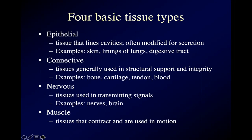The cells in an animal are organized — except in the sponges, the simplest of all — into units called tissues. That's a grouping, very often a sheet of similar cells, into a larger unit. We can talk about animal bodies as consisting of four basic types of tissue.